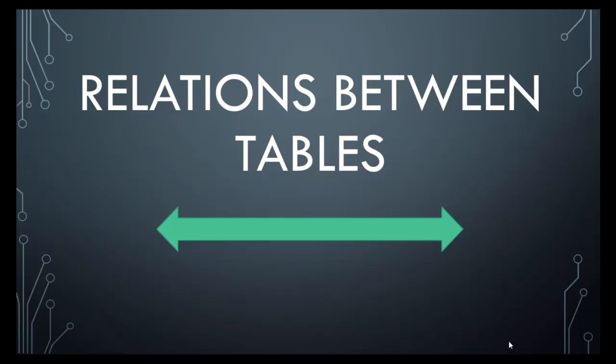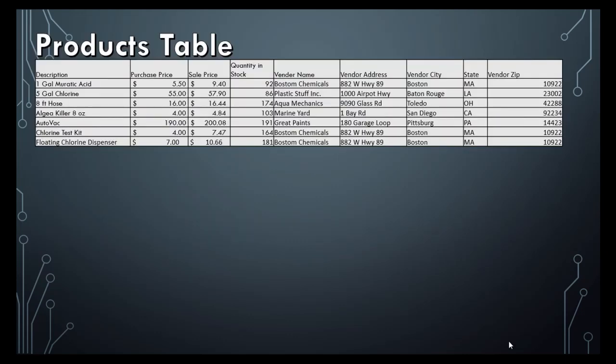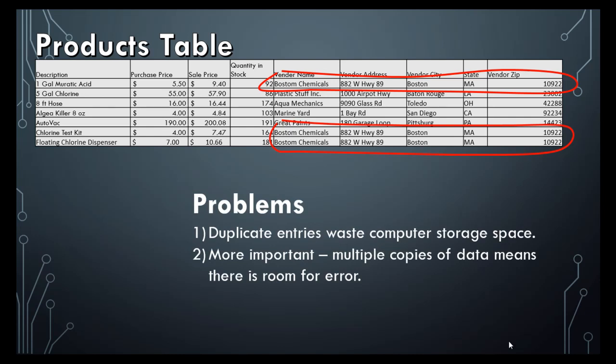Let's talk for a minute about the relationships between different tables. Looking at the products table, if we were working in Excel, we would have to include all the information about every product in every line. For example, muratic acid comes from Boston Chemicals, and the chlorine test and floating chlorine dispenser are also from Boston Chemicals. So there are duplicate entries in the table. This wastes data storage space, and more importantly, if you have more than one copy of an address, you can have mistakes — if somebody updates the street address for a vendor and you don't know which one is correct, you have confusion.